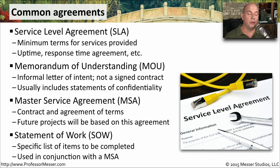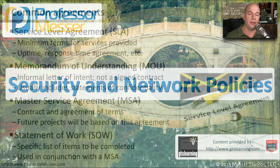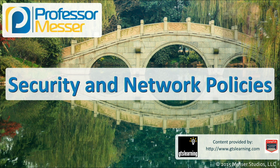A very detailed agreement is something like a statement of work, or an SOW. A statement of work is a very detailed and itemized list of what is expected to be done when services are rendered. This is often paired with a master service agreement, so that you can have an umbrella agreement of minimum terms and a statement of work that provides detailed information about the specific services.